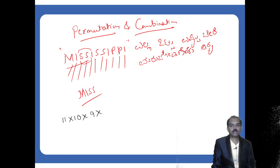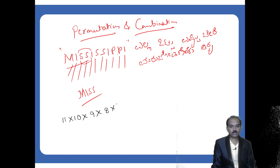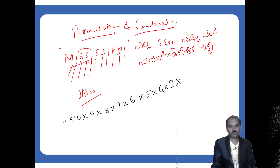In all, there are 11 letters in the word. Start with 11, go till 1: 11 × 10 × 9 × 8 × 7 × 6 × 5 × 4 × 3 × 2 × 1.